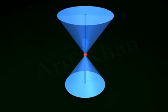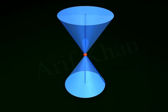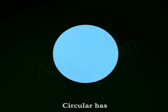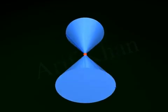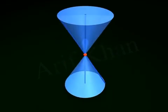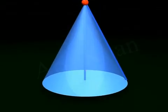The line that rotates about the vertex is called the generator, and the line that remains fixed is called the axis. A right circular cone has a circular base, and its axis is always a perpendicular line from the centre of the base to the vertex.